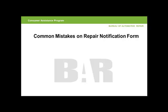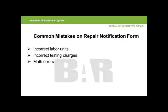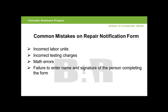Some of the common mistakes made when filling out the repair notification forms are: incorrect labor units — the labor units cannot exceed what is published in a nationally recognized labor time guide; incorrect testing charges — this amount must not exceed what is on file with CAP for your station and must match exactly what is on your station invoice to the consumer; do not include the cost of the smog inspection certificate; math errors — be sure to check your math calculations before submitting; and failure to sign the form — be sure to print your name and sign it.